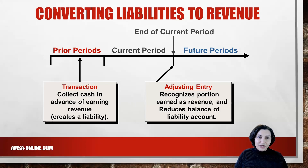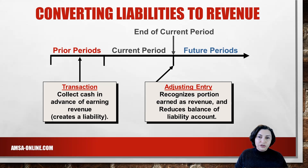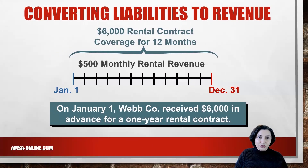Now let's look at the adjusting entry that converts a liability to a revenue. This adjusting entry is necessary when cash has been collected in advance of earning revenue. For example, a magazine publishing company collects cash for a one- or two-year subscription. Other examples include the sales of airline tickets or season tickets for a sports team. At the end of the accounting period, we need to record an adjusting entry to recognize the revenue earned during the period and to reduce the liability account.